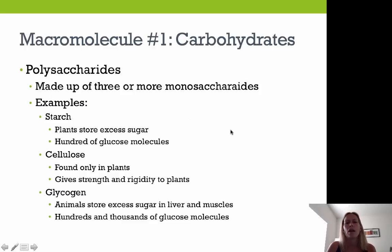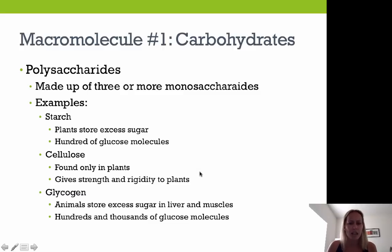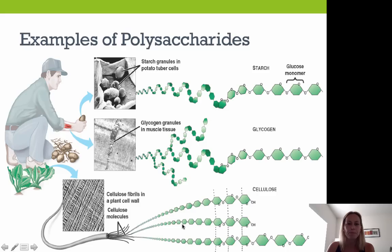Polysaccharides are made up of three or more monosaccharides. Starch is a way for plants to store excess sugar, made up of hundreds of glucose molecules. Cellulose is found only in plants, giving them strength and rigidity — it provides cell wall material and acts like a skeleton for plants. Glycogen is how animals store excess sugar in the liver and muscles, made up of hundreds of thousands of glucose molecules. Your paper is made up of cellulose — long polysaccharide chains.